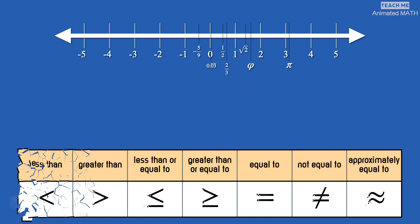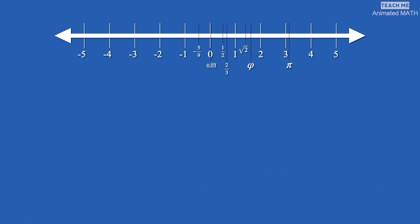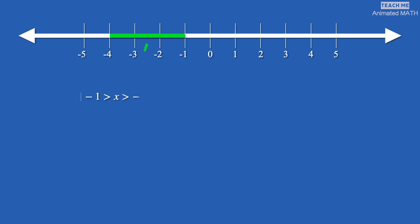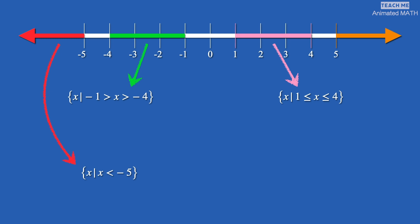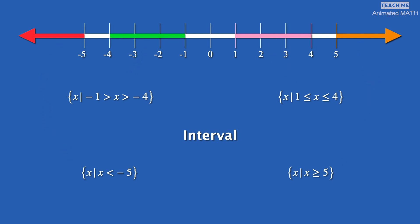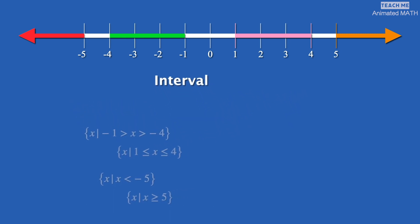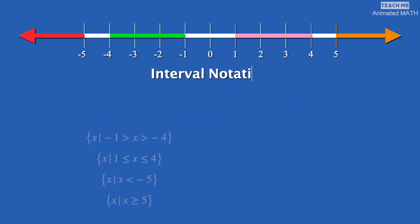The real number line extends infinitely in both directions. Using the symbols we have just learned, we can describe a set between two numbers on the number line using set builder notation. Watch the video on sets to learn more about set builder notation. These sets are called intervals, and we can write them in interval notation by describing the start point and the end point of the interval.